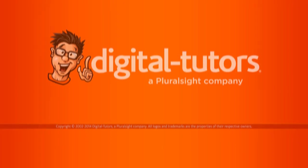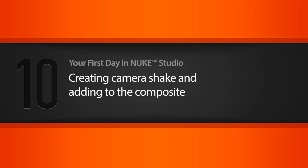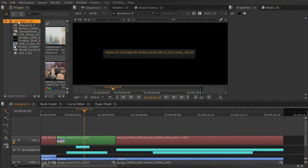In this lesson we're going to be creating camera shake and adding it to the composite. Here we are in lesson 10 underscore begin and we're going to pop back into that street level comp.